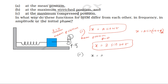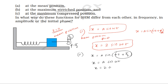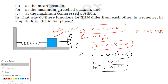The displacement equation is x equal to A sin(ωt + π/2). Since sin(90° + θ) equals cos(θ), this gives x equal to A cos(ωt). This is the second displacement equation.